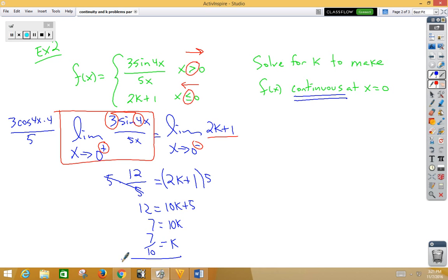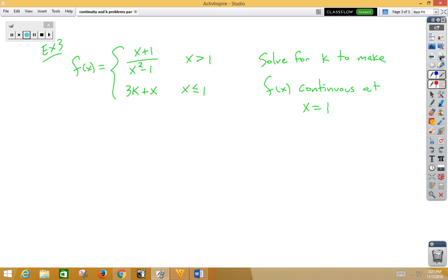Let's go ahead and do one more. In this third example, we are solving for k to make f of x continuous at x is 1. So again, we need the left side and the right side limits to be equal to each other.